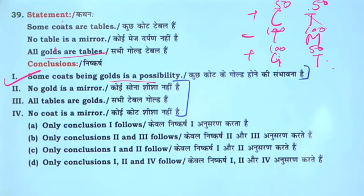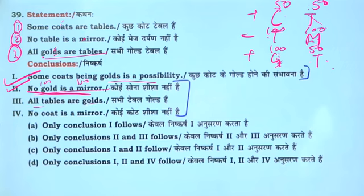If 50-50 cancel, then quote and gold will be possible because the result won't come from first and third, but the possibilities won't come either. No gold is a mirror — gold is mirror: second and third will become a negative statement. So no — no gold is a mirror: this statement — 100-100 and 100. A negative statement also: All tables are gold — so all golds are table; all tables are 150. This won't be right because 50-50 will be 100. No quote is a mirror — quote and mirror: no quote is 100 will be 50, a negative statement. 50 and 100 — so only first and second follow.